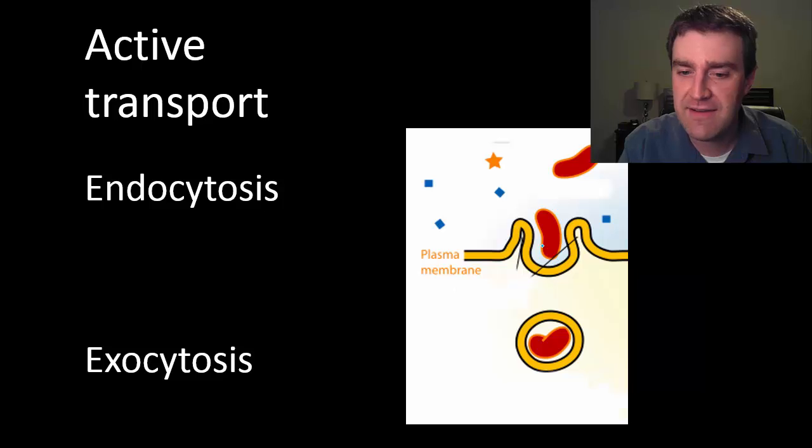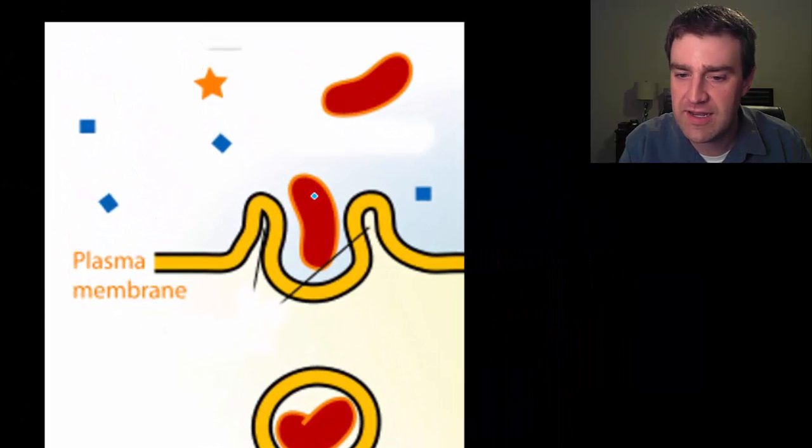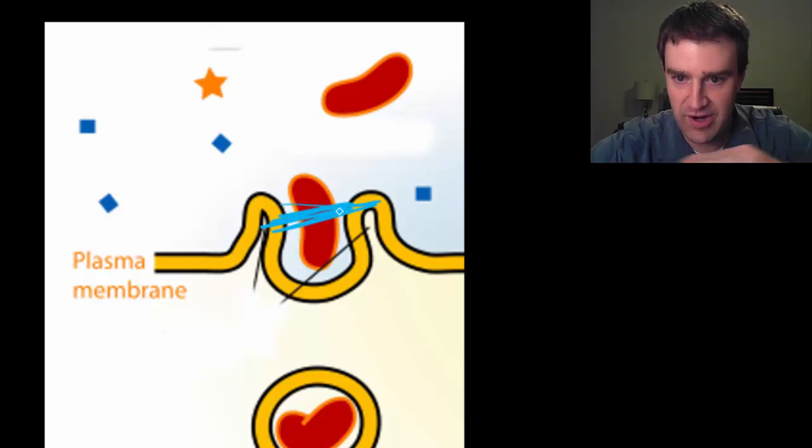They might have to push against the membrane and essentially push a whole little piece of membrane, maybe into or out of the cell. Eventually the little bubble of membrane kind of pinches off and then the rest of the membrane collapses and forms the membrane again.